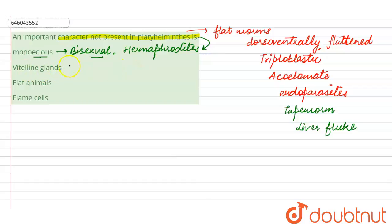This is the right option, whereas the second option which is given here is the vitelline glands. Vitelline glands is the wrong option here, while vitelline glands is not present in this one. So option number two here becomes the right answer for this question. Let's mark option number two as the correct answer.